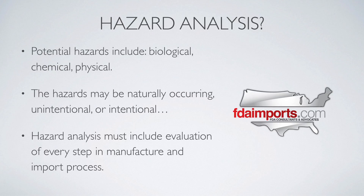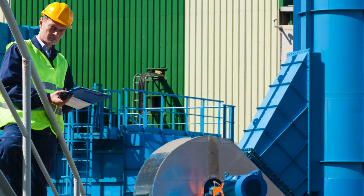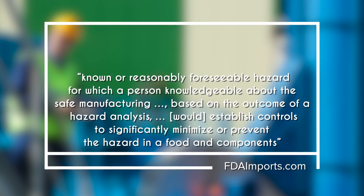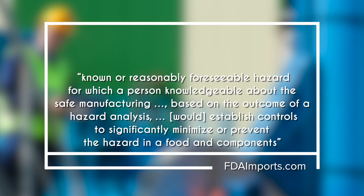FDA is also concerned about intentionally introduced risks — the kinds of risks that someone might deliberately introduce into the food. The FDA also requires you to assess the severity of the hazard and determine whether or not it really requires controls. The standard is: known or reasonably foreseeable hazards for which a person knowledgeable about the safe manufacturing of food, based on the outcome of the hazard analysis, would establish controls in order to significantly minimize or prevent the hazard in a food or its components.